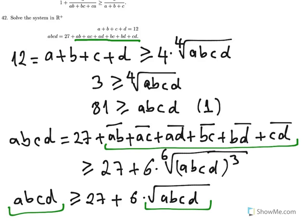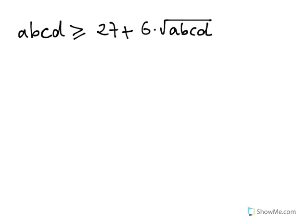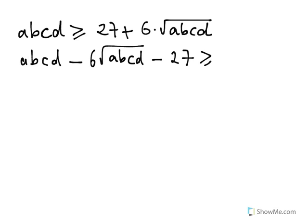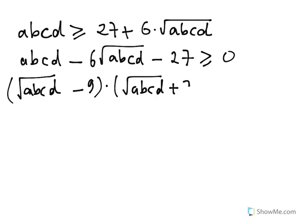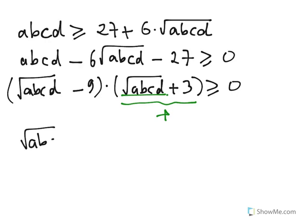We can solve this by factorizing the quadratic inequality. Transposing everything to the left side: T squared minus 6T minus 27 is greater than or equal to zero. Factorizing: (√(ABCD) − 9)(√(ABCD) + 3) is greater than or equal to zero. Since √(ABCD) + 3 is always positive, we need √(ABCD) − 9 to be greater than or equal to zero. So ABCD is greater than or equal to 81. Let's call this inequality (2).